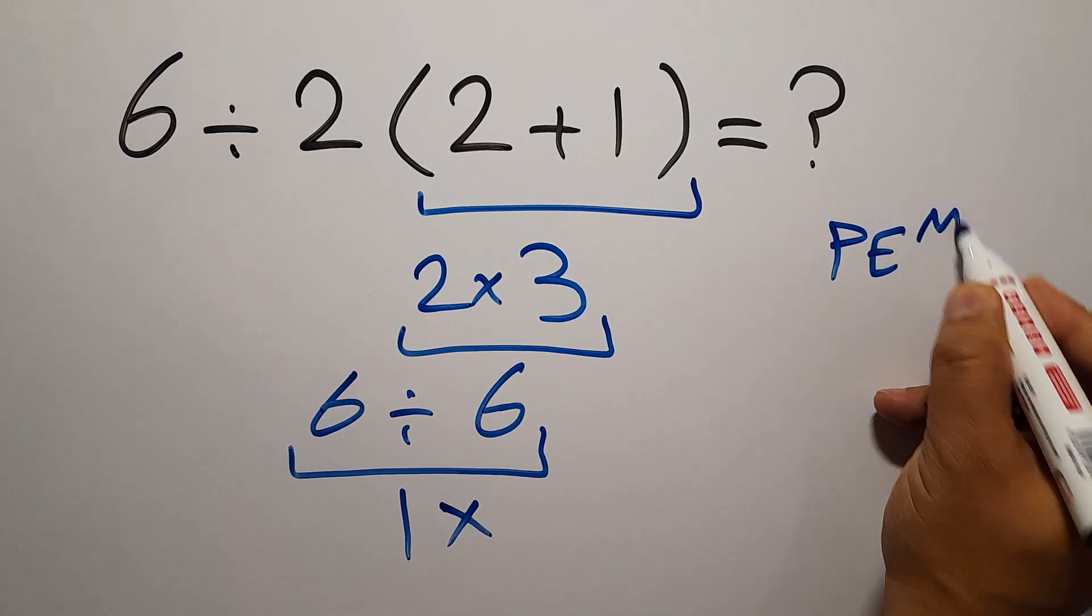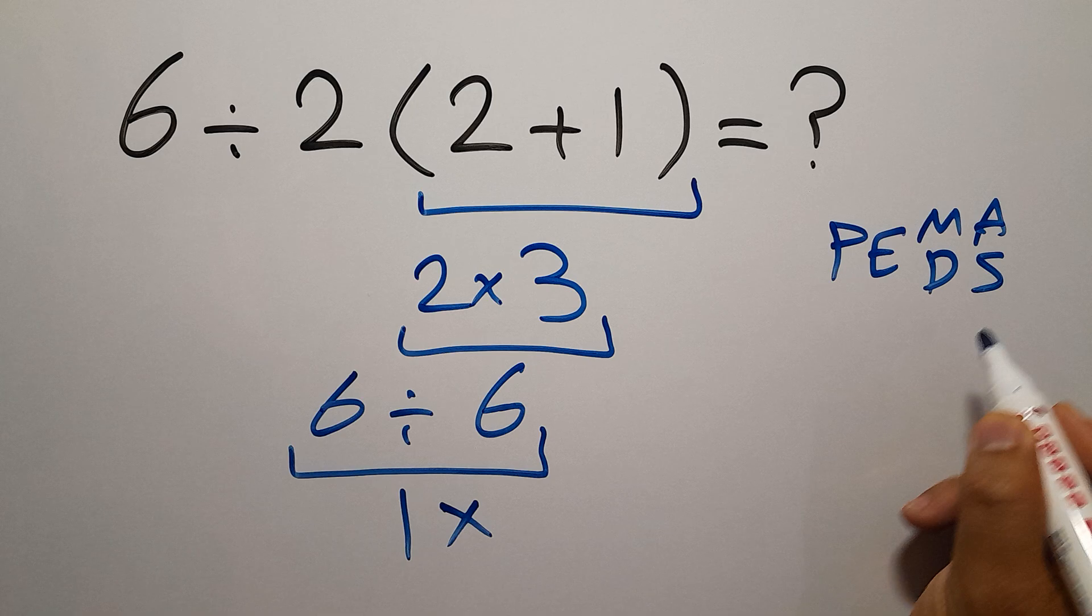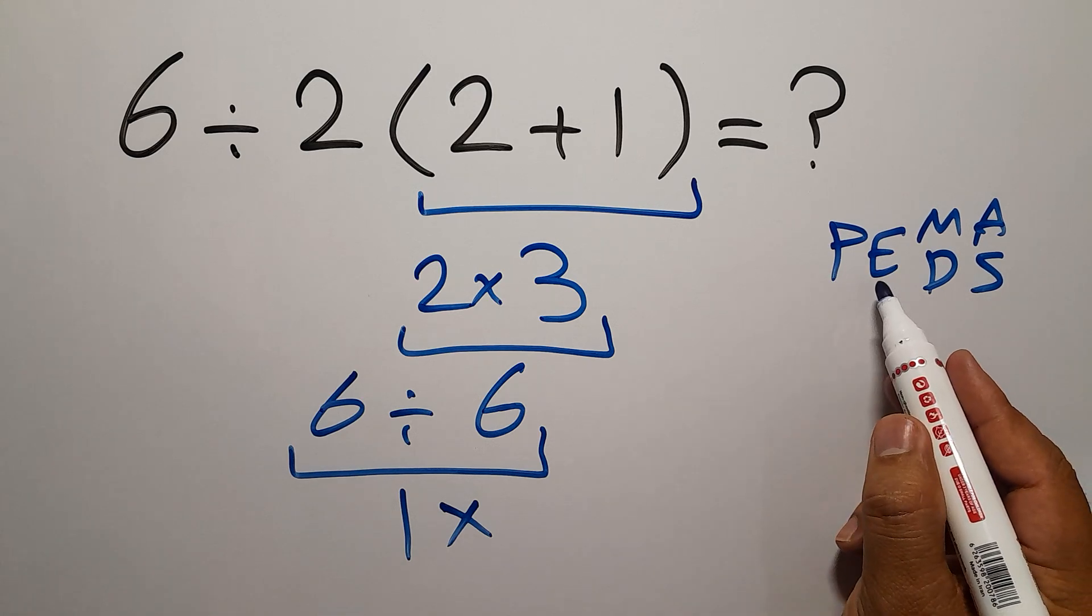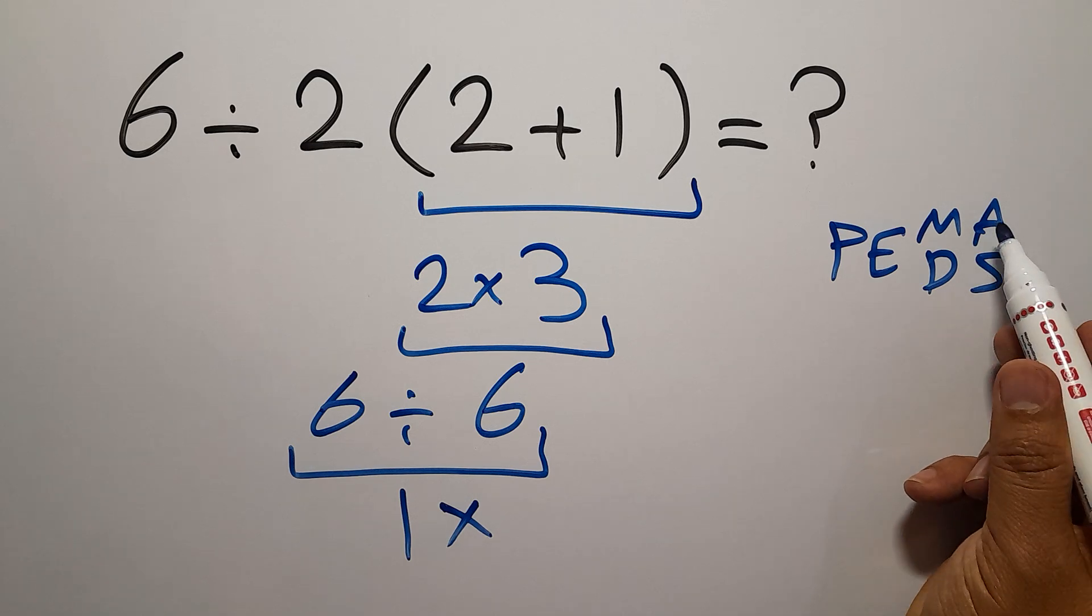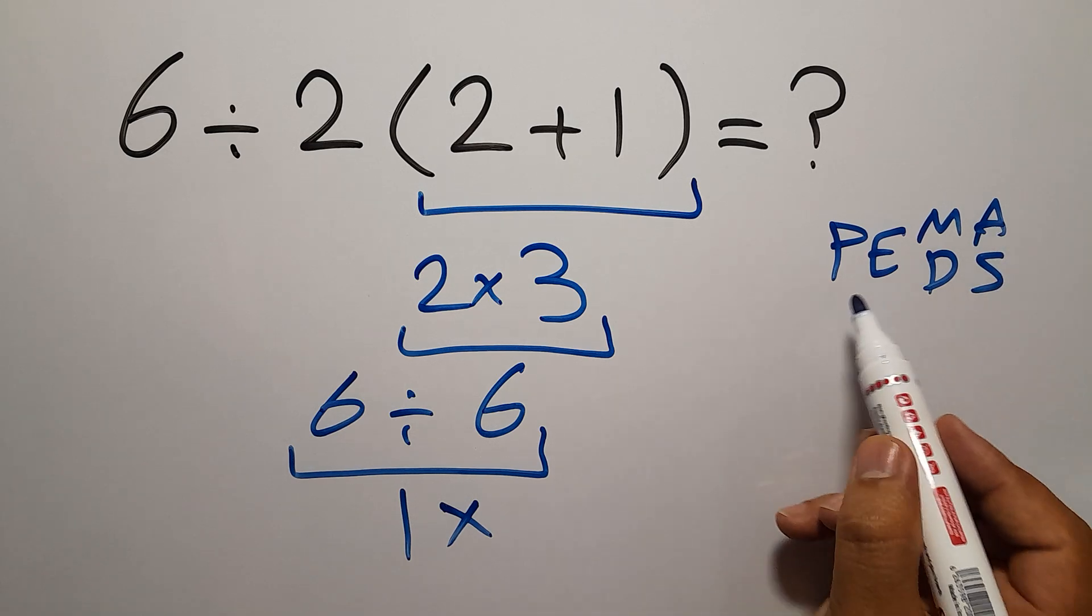P stands for parentheses, E stands for exponents, M and D stands for multiplication and division, and A and S stands for addition and subtraction.